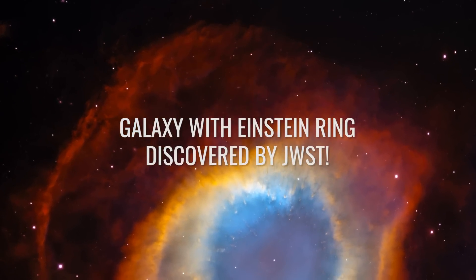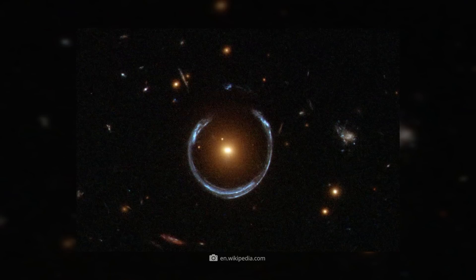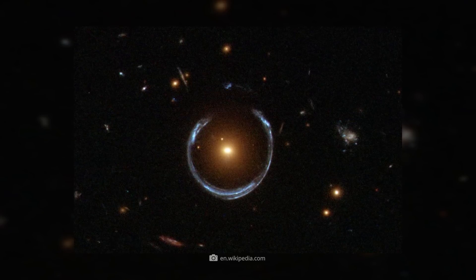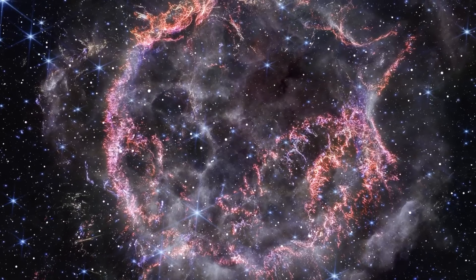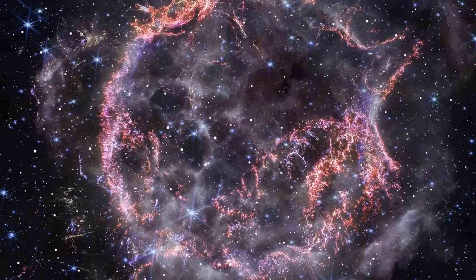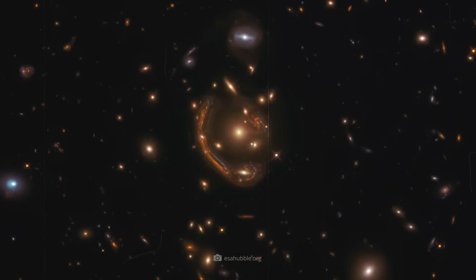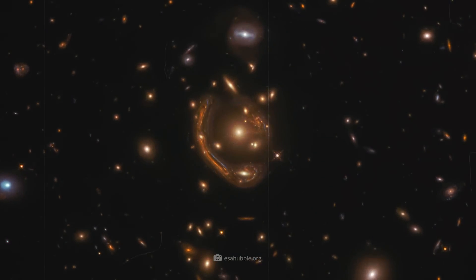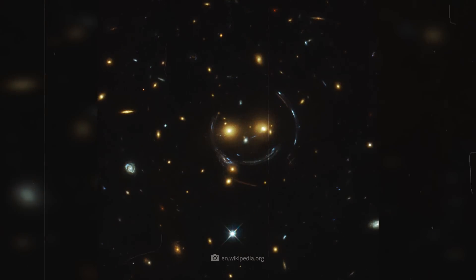Galaxy with Einstein ring discovered by JWST. Have you ever heard of an Einstein ring? These astronomical objects were long a purely hypothetical assumption. It was basically the mathematical genius Albert Einstein who predicted the existence of these objects, but no one has seen one for almost 100 years. Einstein rings are, simply put, special cases of gravitational lensing. However, they do not form a magnifying glass-like arc, but a perfect ring.